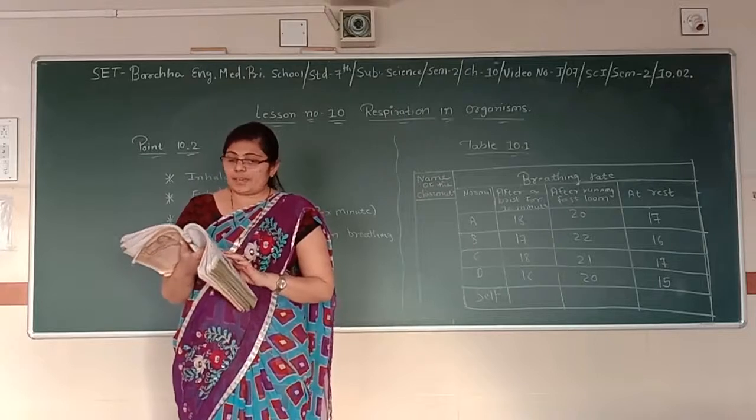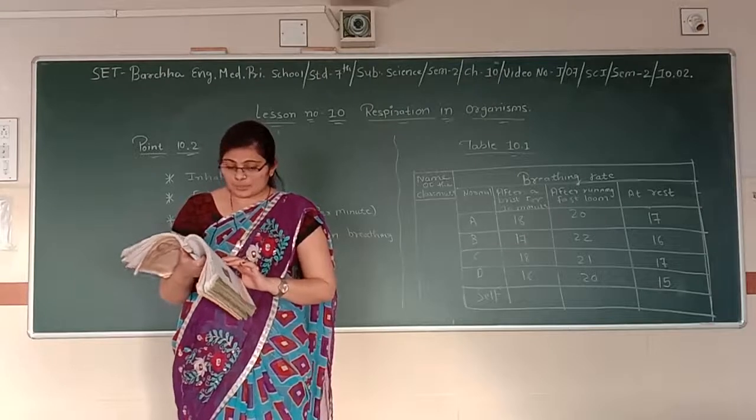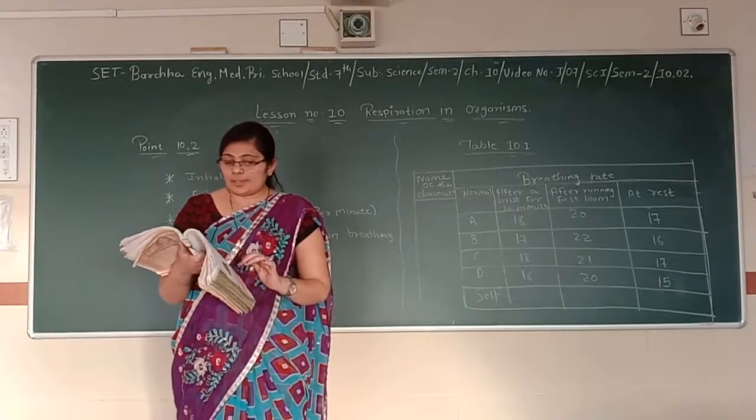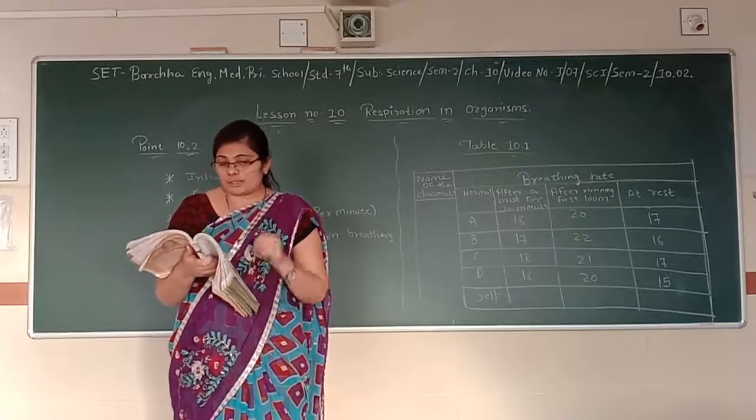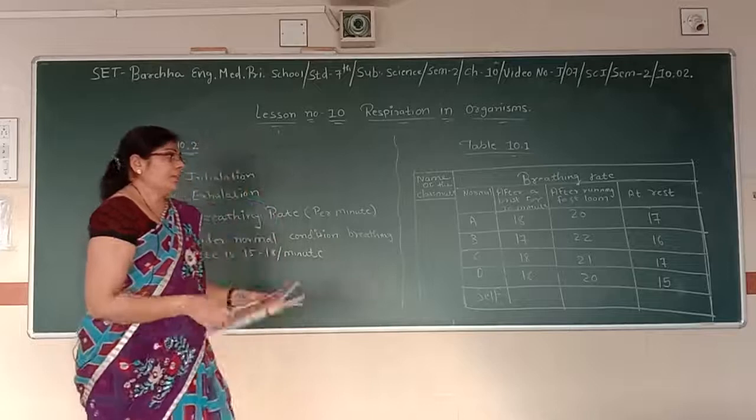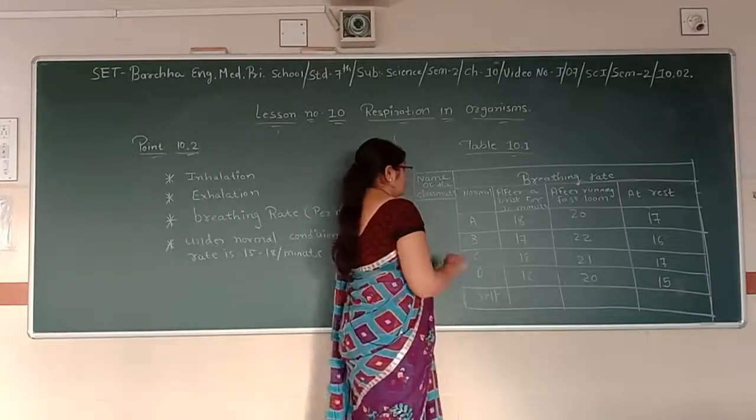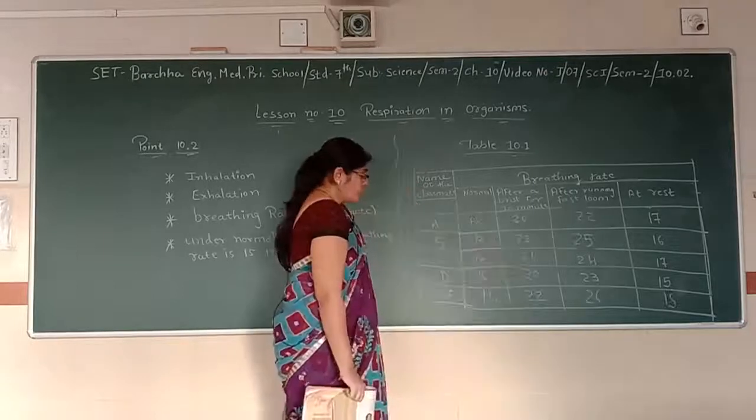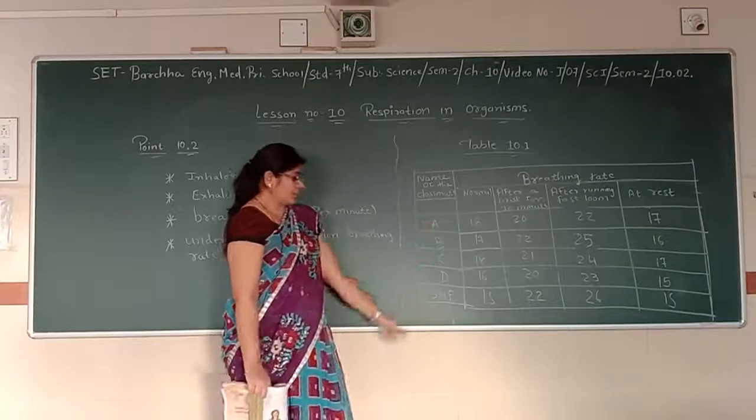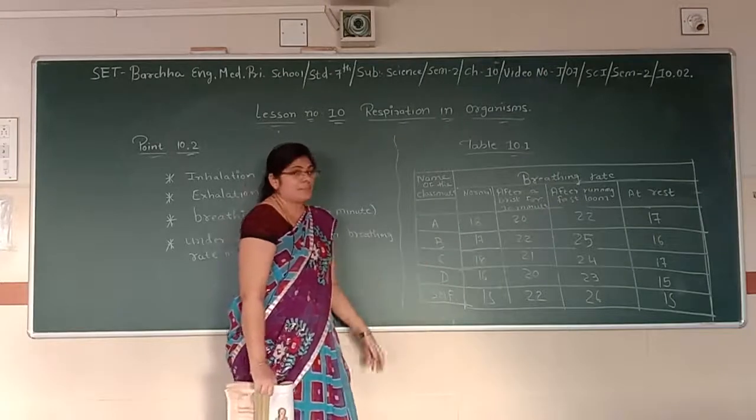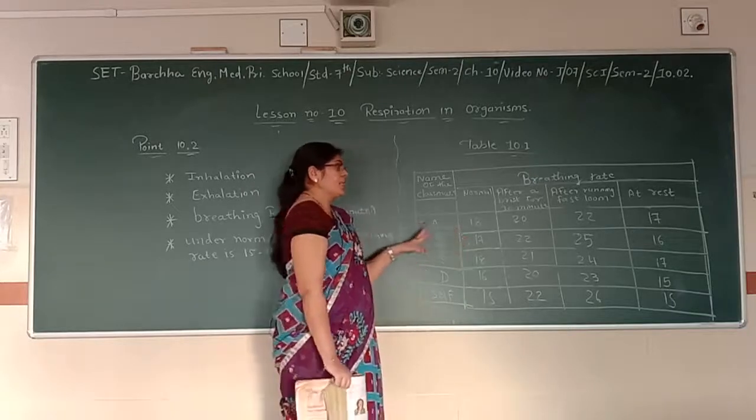Record your breathing rate as soon as you finished and also after complete rest. Tabulate your findings and compare your breathing rate under the different conditions with those of your classmates. From the above activity, you must have realized that whenever a person needs extra energy, he and she breathes faster. See, now they are telling you to perform an activity with your friends. See, what you need to do? What you need to do? You need to write down the name of your friends. Right now, I am writing just A, B, C, D and self. Self means myself. So, when I count the breathing rate of A.